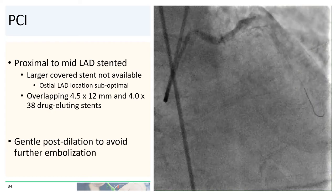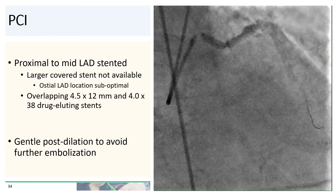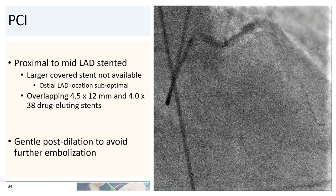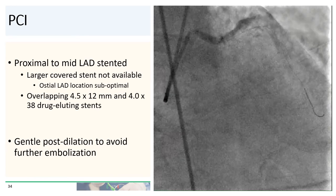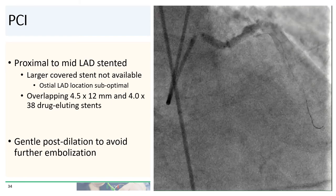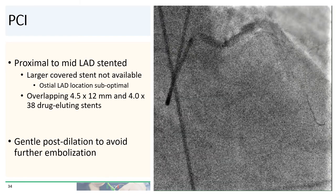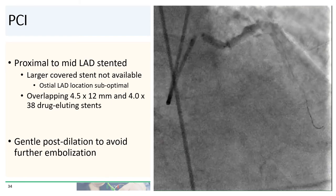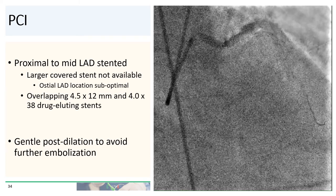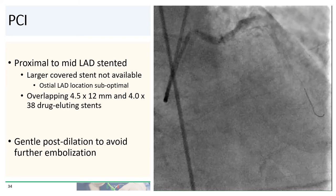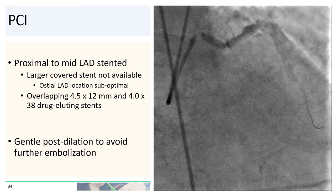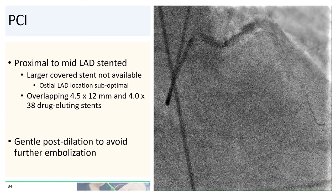In our case, we went ahead and proceeded to stent the proximal and mid-LAD with overlapping 4.5 by 12 mm and 4.0 by 38 mm drug-eluting stents. We considered using covered stents, but the covered stents in the larger sizes were not available. Moreover, the ostial location of the lesion in the LAD makes placement of a covered stent suboptimal. After the stent was deployed, we performed very gentle post-dilation to avoid further thrombus embolization, given that the patient had just arrested with no reflow.